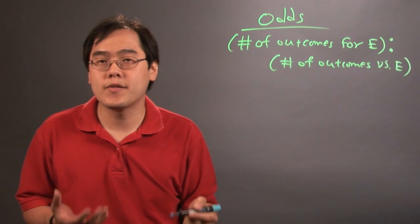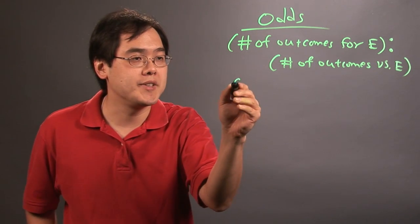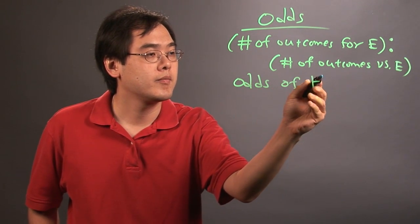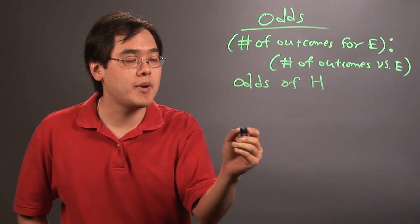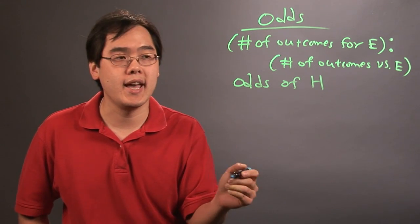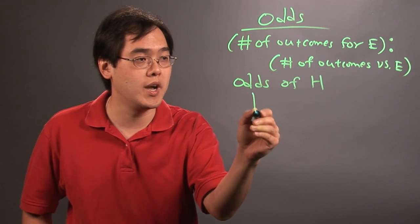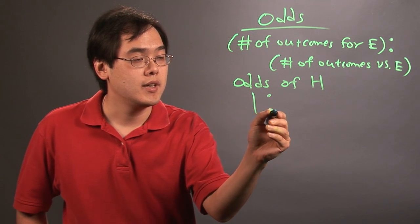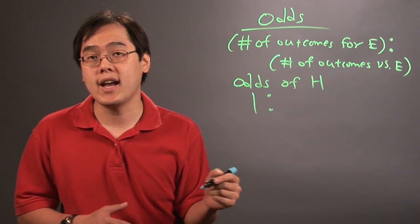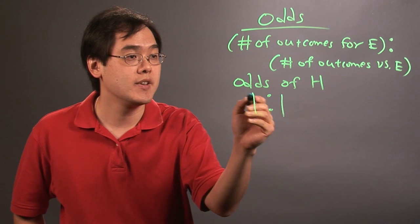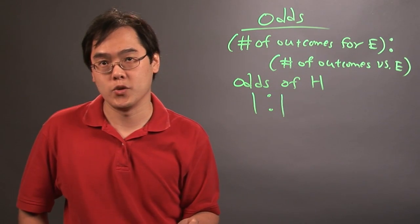So, the idea here is if you're flipping a coin and you want to find out the odds of a head, basically you're thinking about the number of ways you can get a head if you're flipping the coin once, it'll just be one, and then the number of ways you cannot get a head, which is tails, and that'll be one, so the odds of flipping a coin and getting a head is one to one.